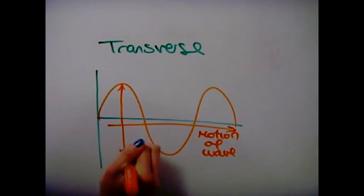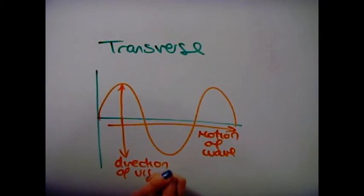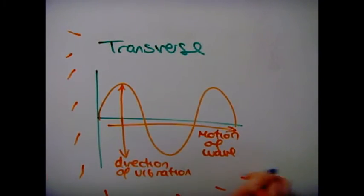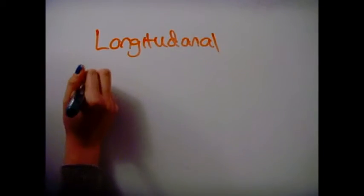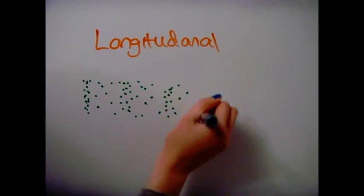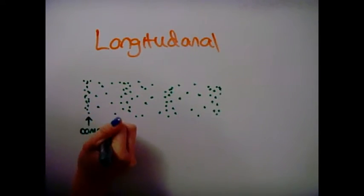In a transverse wave, such as a light wave, the energy moves perpendicularly to the vibrations. With longitudinal waves, such as sound waves, the energy moves along the direction of the vibrations.